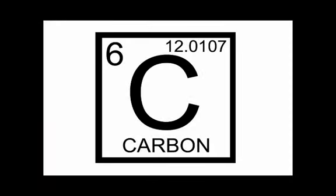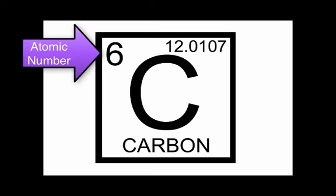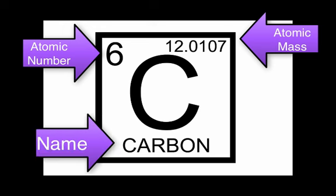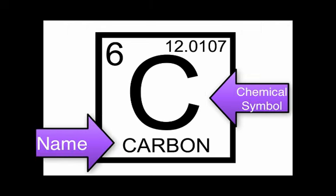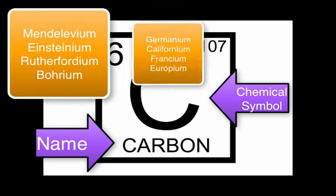While an element's location on the periodic table can tell you a lot about its properties, the square on the periodic table also tells you information about the element, including its atomic number, its atomic mass, name, and chemical symbol. An international committee of scientists is responsible for approving the names and chemical symbols of the elements. The names of the elements come from many sources — for example, some elements are named after important scientists, and others are named for geographical regions.